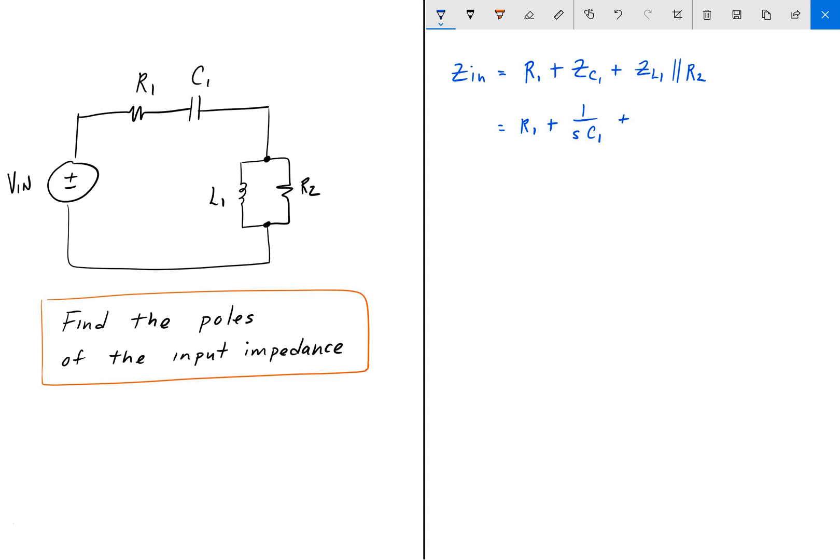Plus this is just going to be your product over sum. So that's going to be Sl1 multiplied by R2 divided by Sl1 plus R2, where Sl1 is the impedance of an inductor.